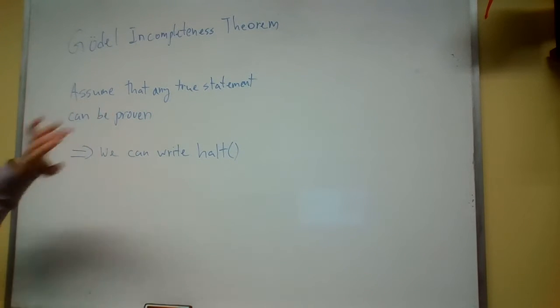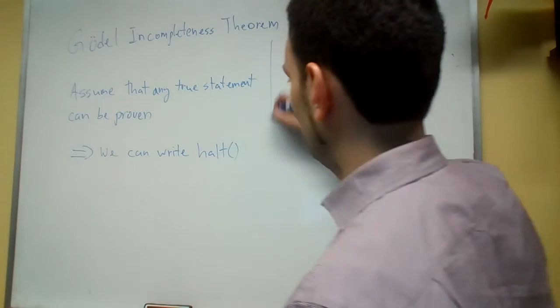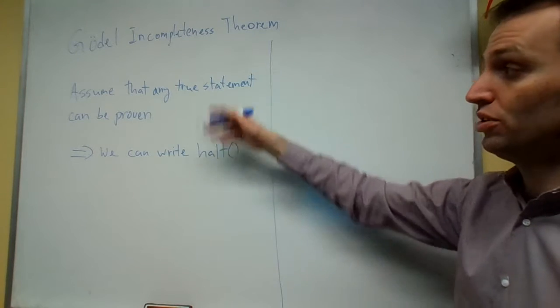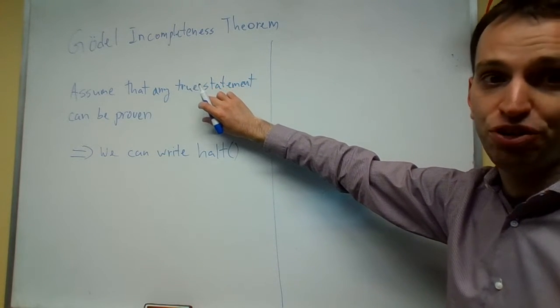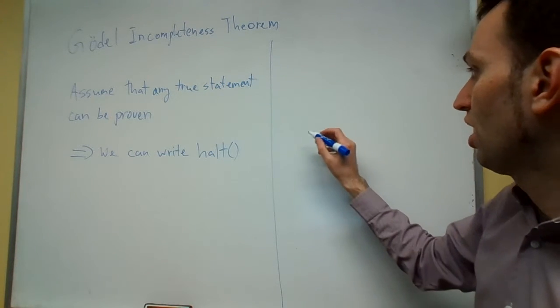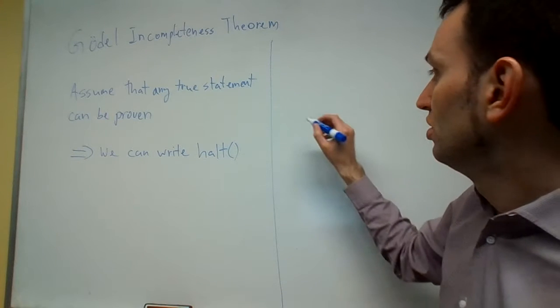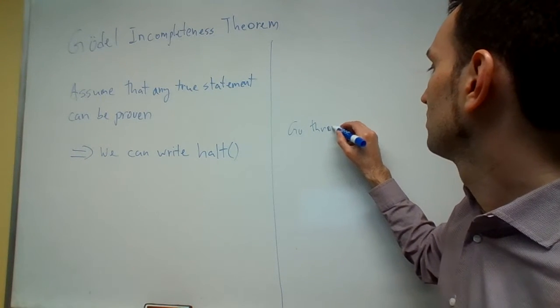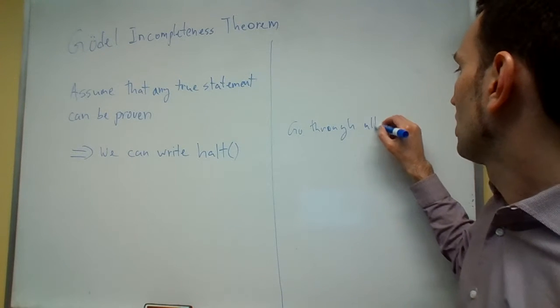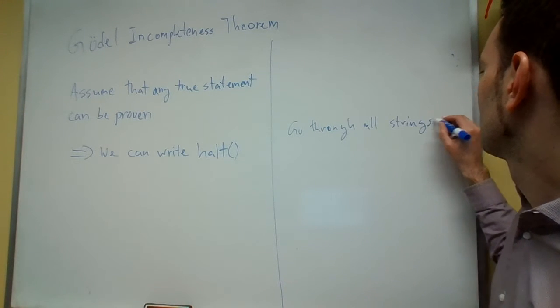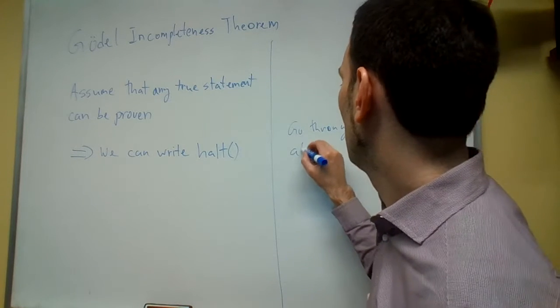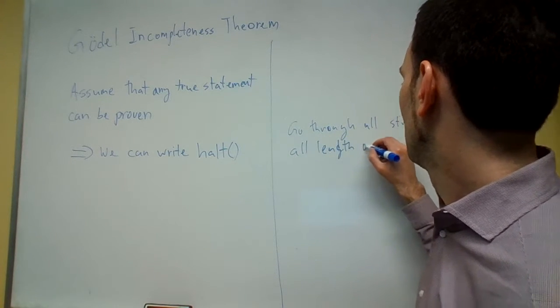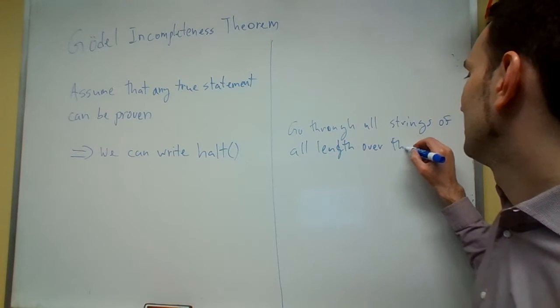So here's how we're going to go about doing this. We're going to say, okay, let's try to write halt using this assumption. Here's how we're going to do it: we're going to go through all strings of all lengths over the Latin alphabet.